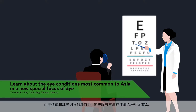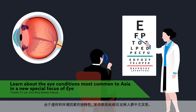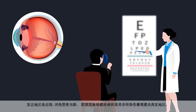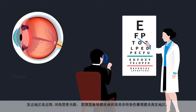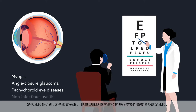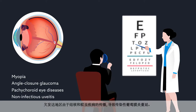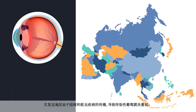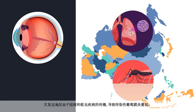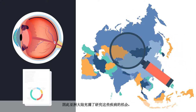Due to a unique mix of genetic and environmental risk factors, certain eye diseases are particularly common in Asian populations. Well-developed areas are home to a high prevalence of myopia, angle-closure glaucoma, pachychoroid eye disease, and certain types of non-infectious uveitis. Underdeveloped regions have seen the spread of infectious uveitis due to tuberculosis and mosquito-borne disease. The result is a continent full of opportunities for the study of these disorders.